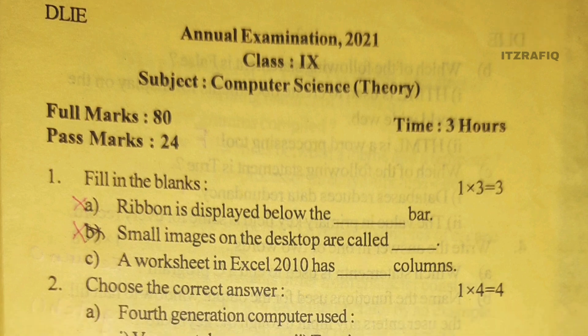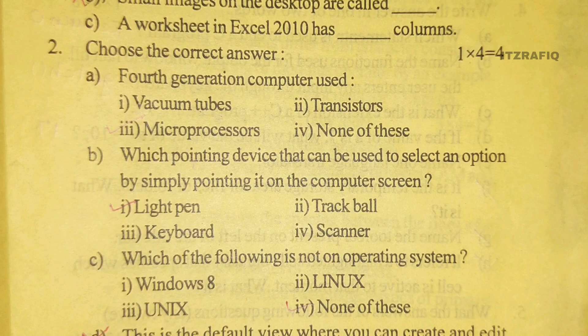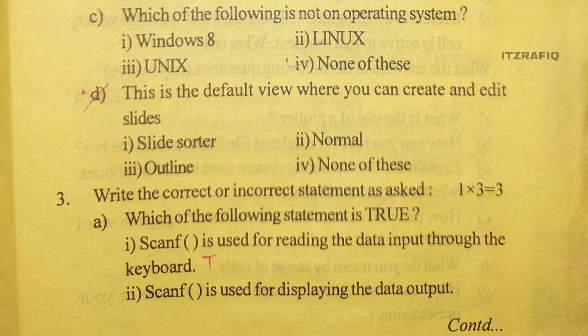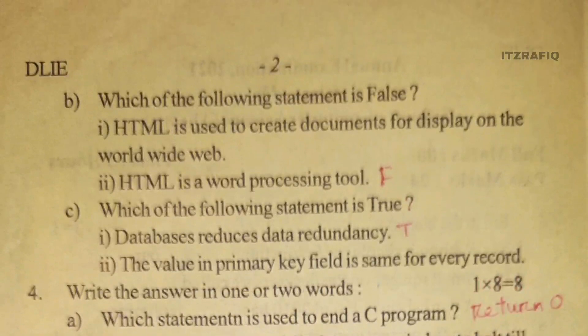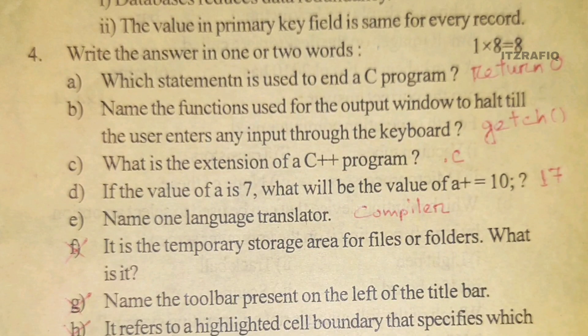So these questions are already cross-marked. Fill in the blanks, completely omitted parts are cross-marked, so we don't need those. Choose the correct answer, already ticked the correct answer. One word answers are already written. What is crossed out is not required.